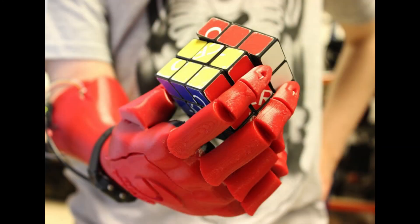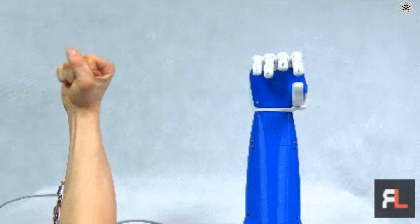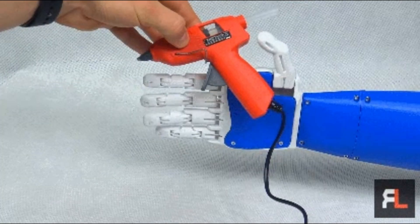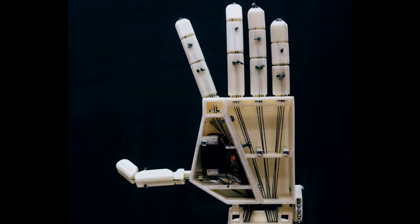ETH Zurich researchers have achieved a breakthrough by using new technology to print a robotic hand in a single printing session. The hand is composed of polymers that form its bones, ligaments and tendons.